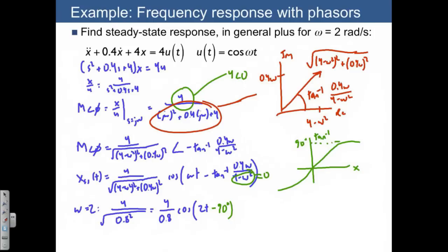Let's think about 4 divided by 0.8. That's the same thing as just the value of 5 cosine 2t minus 90 degrees. So let's plot what this looks like.